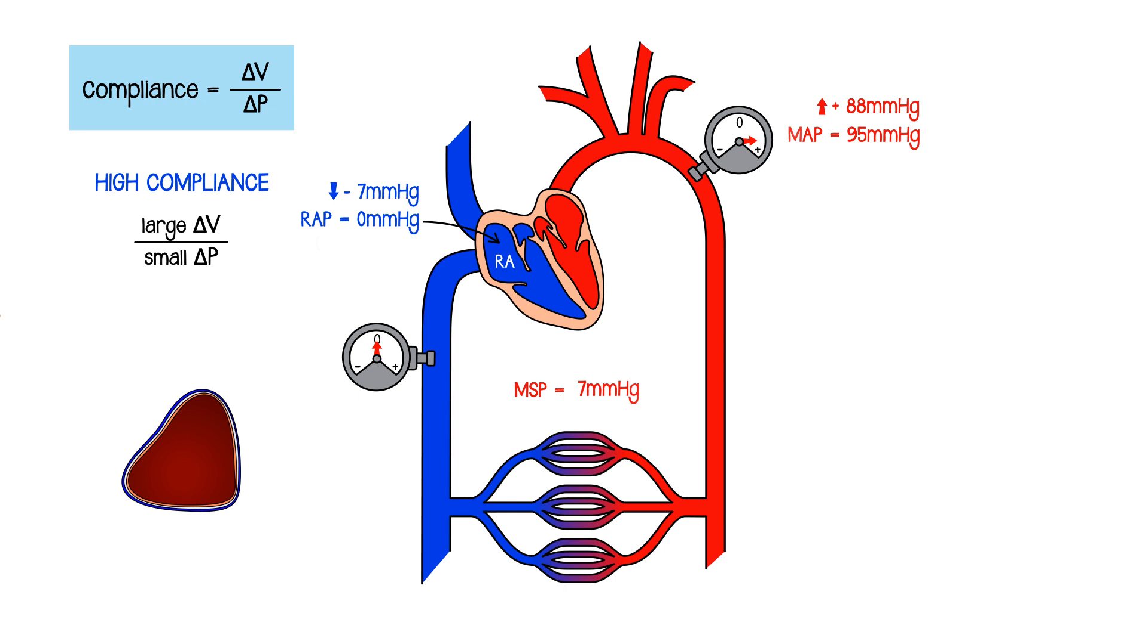But the compliance on the arterial side is very low. The arteries are relatively stiff. They're elastic vessels. They've got a lot of connective tissue in the walls. The walls are very thick. And what that means is if you try to ram a little bit more blood into them, it might only be a small amount of extra blood, but the pressure will rocket up. If the compliance is small, a change in volume translates into a large change in pressure.